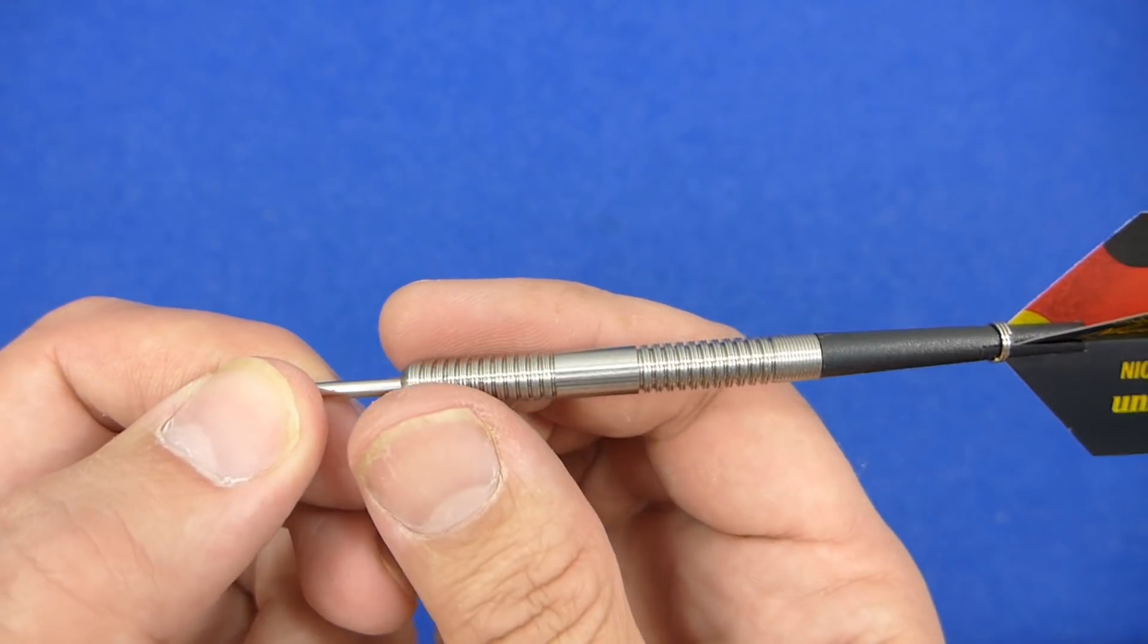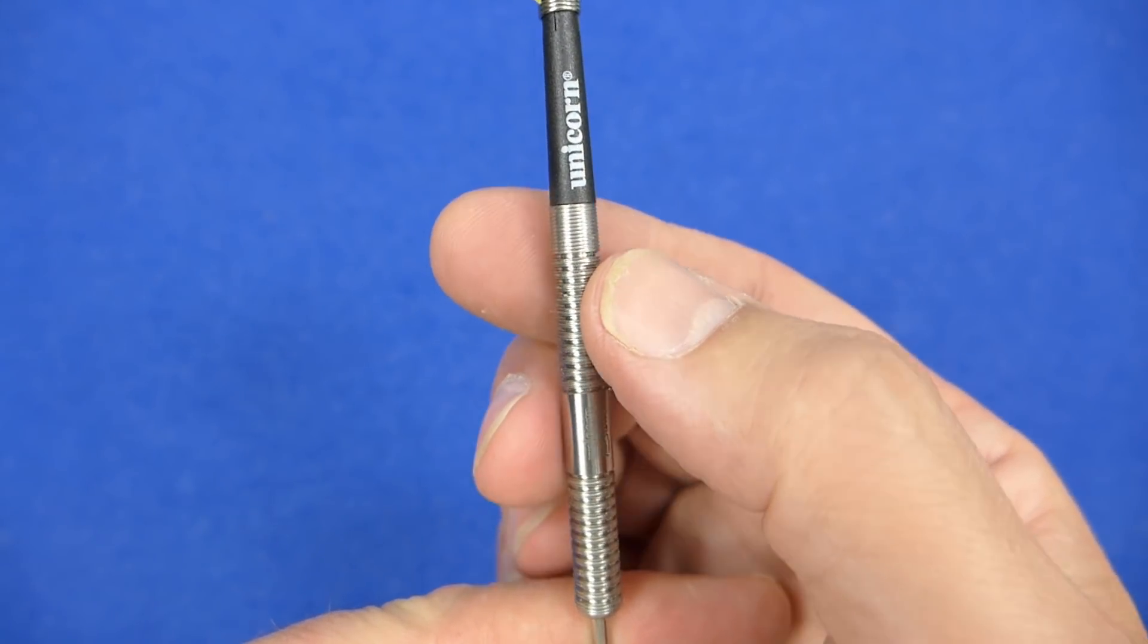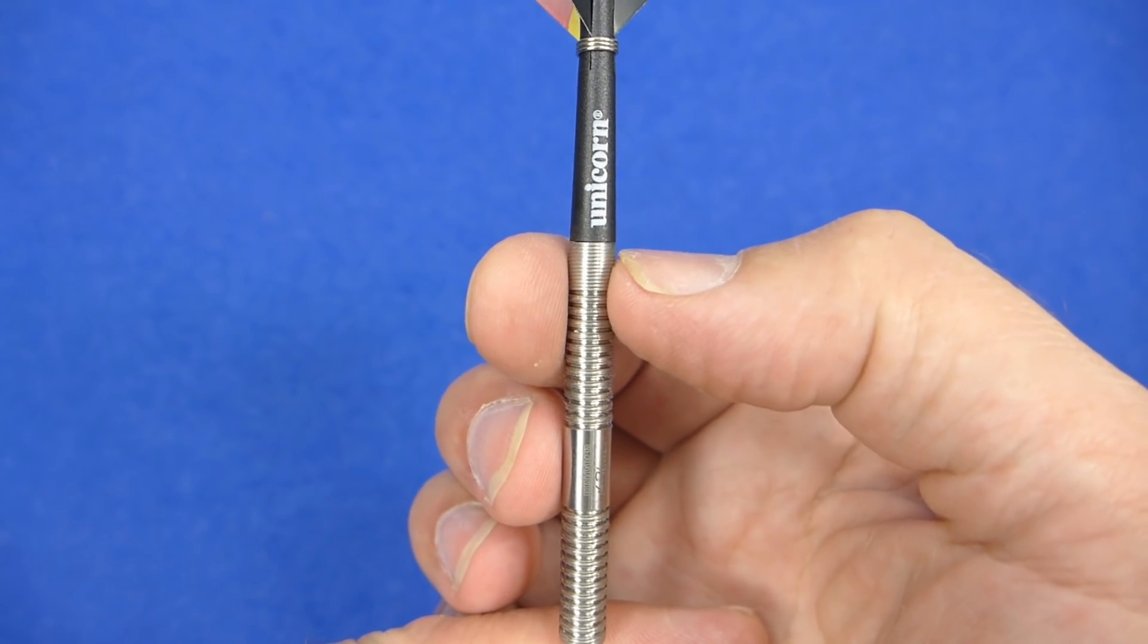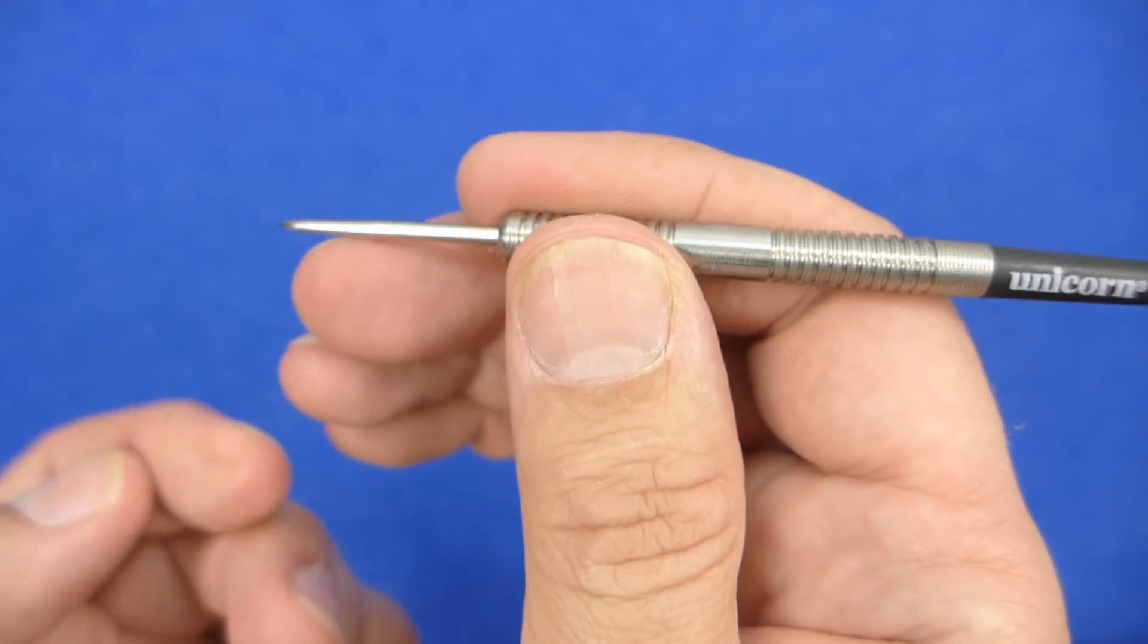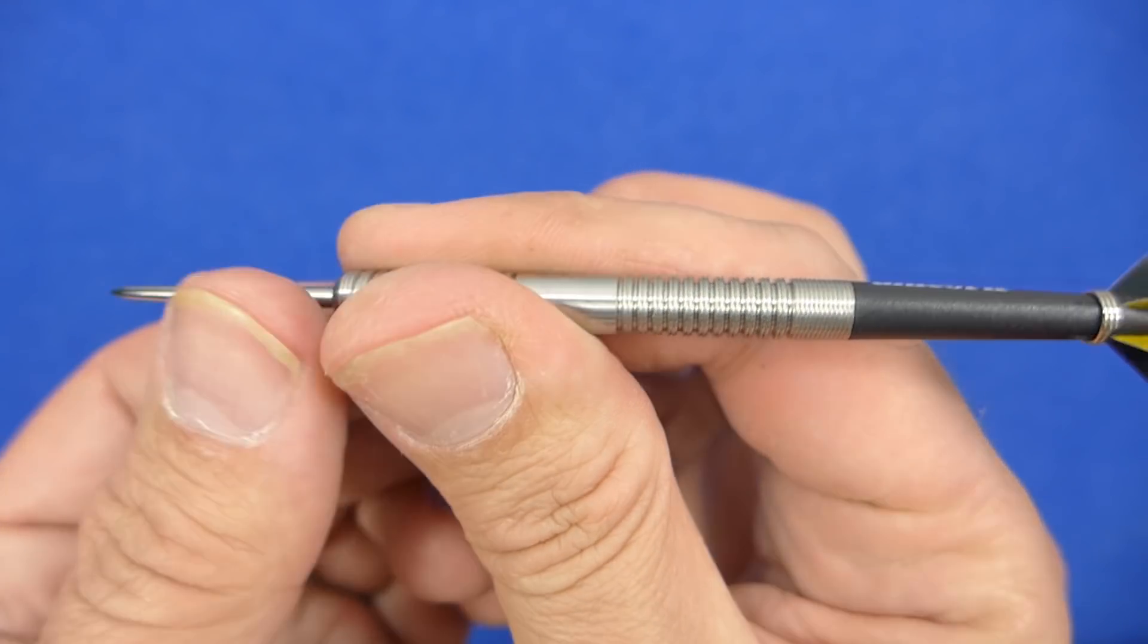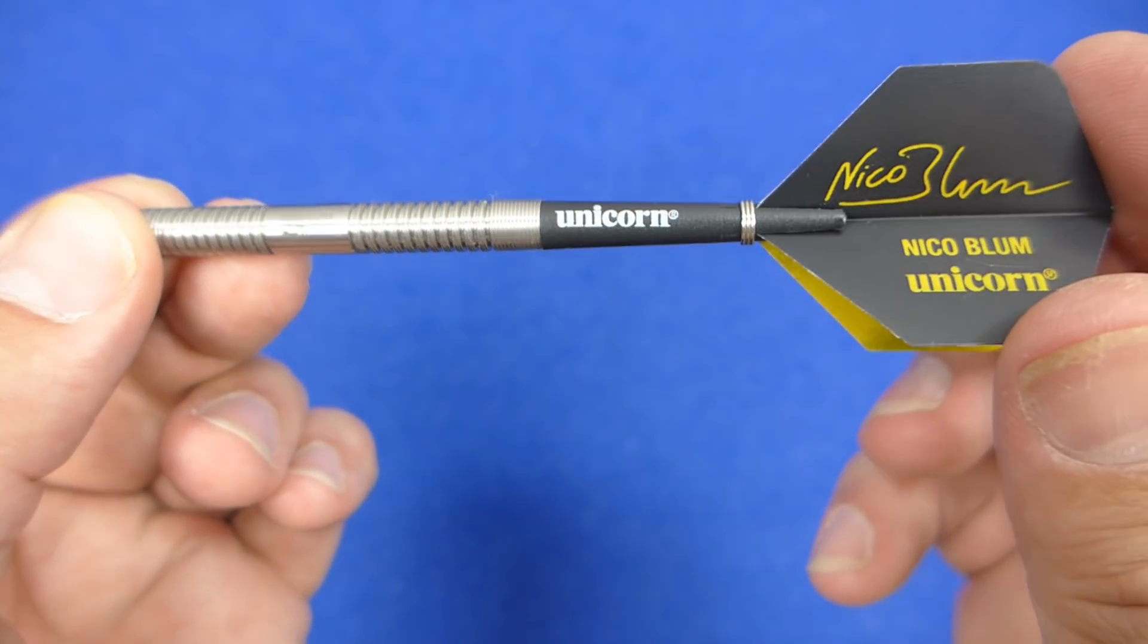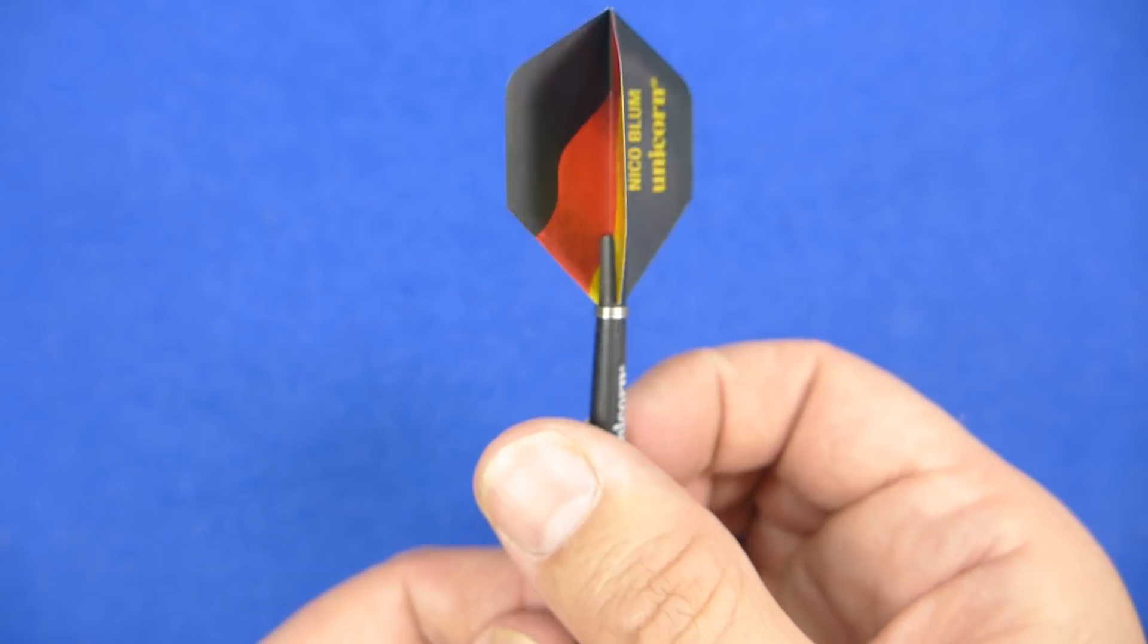You've got a smooth section around the middle, but the rest of the barrel has this thin cut ring grip, and just on the end it's the micro grip only. Still feels quite a nice dart and quite a slim dart as well. Then you've got your gripper stems and the Nico Blum signature flights.